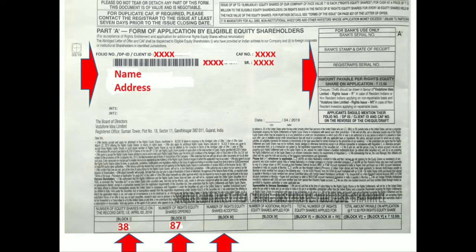If you want to look for 87 shares, you might have to look for 87. If you want to add block 4, you can add a block of block 3. It will be added.